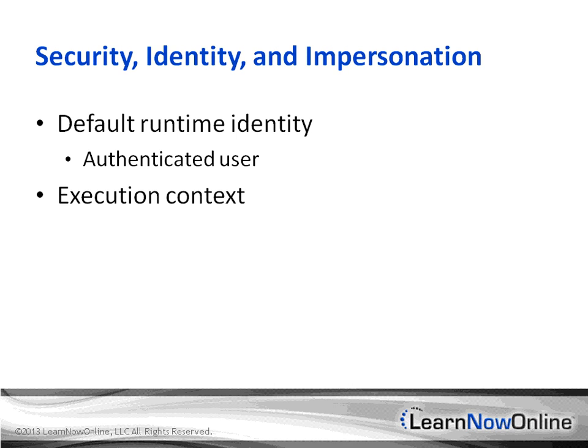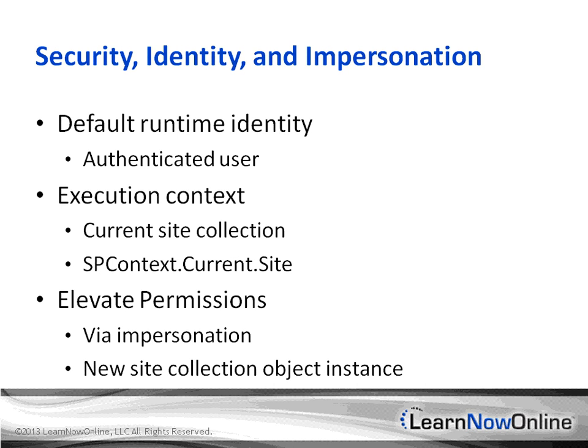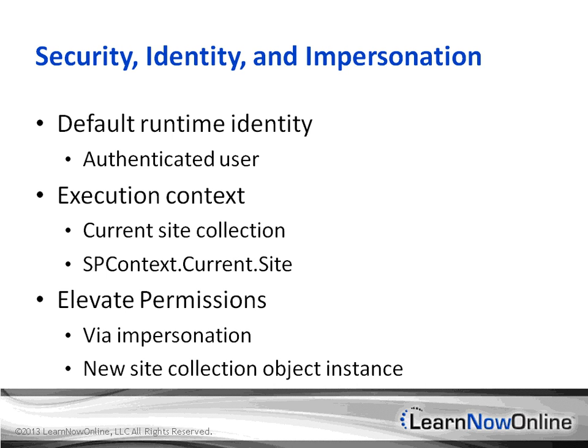A lot of times you have to create code that performs actions on behalf of a user that doesn't have permissions to perform the action. In those cases we need to elevate permissions, and the way of doing that is via impersonation. The important thing is you have to create a new site collection — you can't use SPContext.Current.Site because it's associated with the context of that lower privilege user. So you have to instantiate a new site collection object.